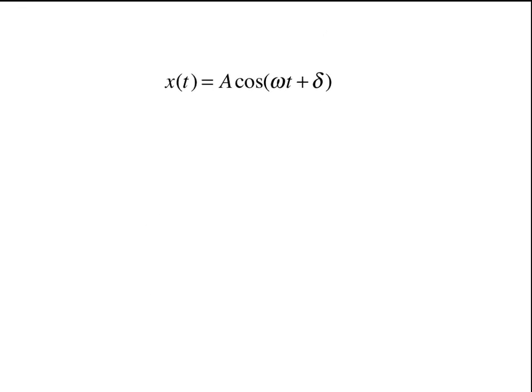All right, so there are other things we can do here. Let's take that equation, x(t) equals A cosine(ωt + δ), and let's go ahead and take the derivative. So what's going to happen when we take the derivative? Well, the derivative of cosine is negative sine. And we're going to have to use the chain rule as well because we have ωt + δ inside the argument. So when we take the derivative, we get dx/dt equals -Aω sin(ωt + δ).